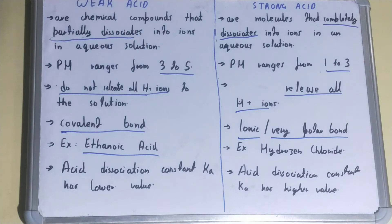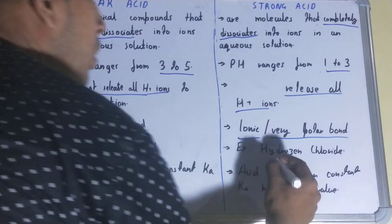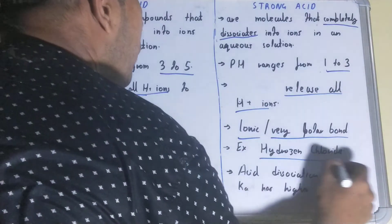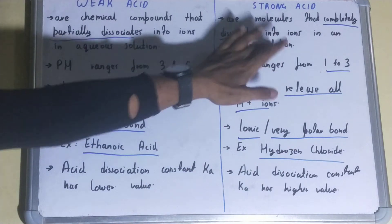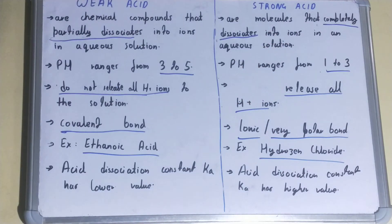For example, ethanoic acid is a weak acid that does not dissociate completely when dissolved in aqueous solution. Hydrogen chloride is an example of a strong acid, which releases all its H⁺ ions when dissolved in aqueous solution.